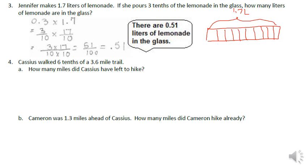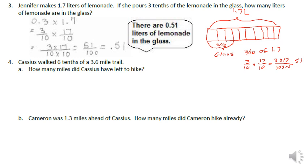The diagram shows 3 tenths going into a glass. We want to know what 3 tenths of 1.7 is — so 3 tenths times 1.7, converting 1.7 to 17 tenths, equals 3 times 17 over 10 times 10, which equals 51 hundredths. The 1 is in the hundredths place, so the answer is 0.51 liters.